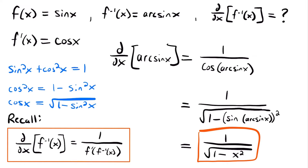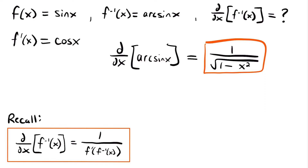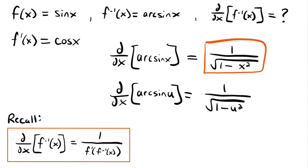We can also write this with the chain rule for a general function u defined in terms of x: d/dx [arcsin(u)] equals u prime divided by the square root of 1 minus u squared, where u prime is du/dx. We could go through this same process for all other inverse trig functions, but for the sake of time we'll just look at all the derivative rules together and then work through examples.